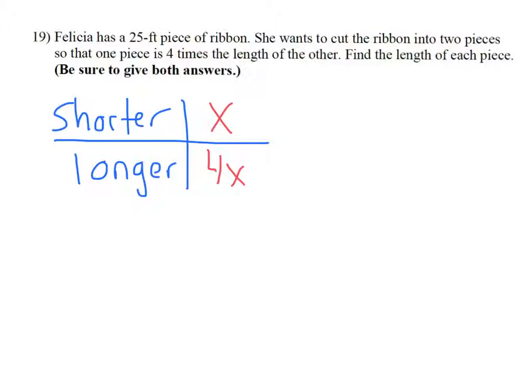Now, we need to determine what we need to do with these two expressions. I know that the total length of the ribbon is 25 feet. The total length of the ribbon means that I need to add the shorter plus the longer. x plus 4x will equal 25, the total length of the ribbon.